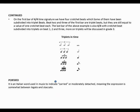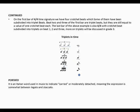Let's take a look at triplets in different note values. For a semi-brief, we use minim triplets. For a minim, we use crotchet triplets. For a crotchet, we use quaver triplets. For a quaver, we use semi-quaver triplets. For a semi-quaver, we use demi-semi-quaver triplets.